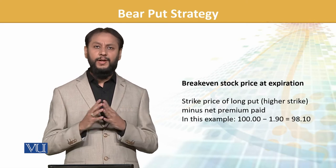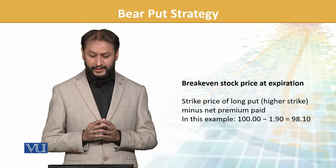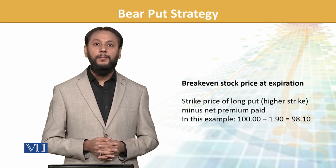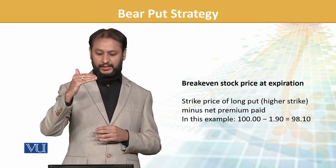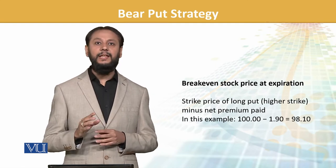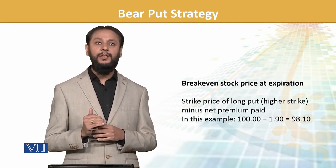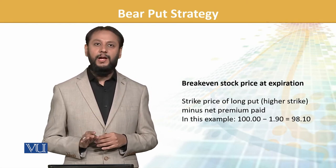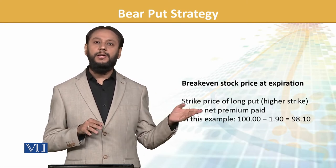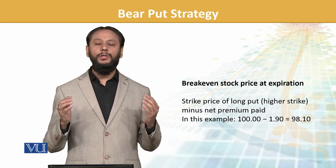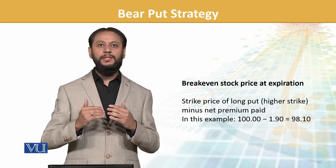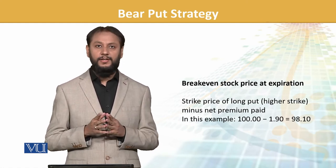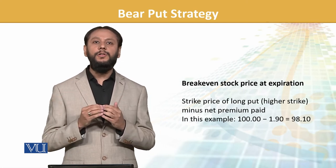Break-even point क्या है — जैसे के आपको पता है के हमने 100 वाली put ली है और 1.9 हमने उस पे premium दिया है। अगर share 100 से नीचे आए 1.9, یعنی 98.1 पे अगर share आ जाए — یعنی हमारी expected direction में stock move कर गया — तो your cost is being covered with the movement.